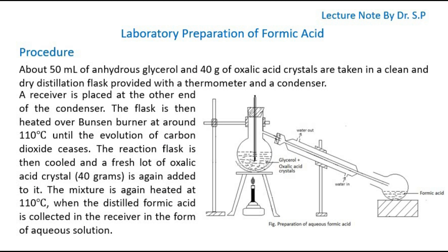A receiver is placed at the other end of the condenser. The flask is then heated over a Bunsen burner at around 110 degrees Celsius until the evolution of carbon dioxide ceases. The reaction flask is then cooled.